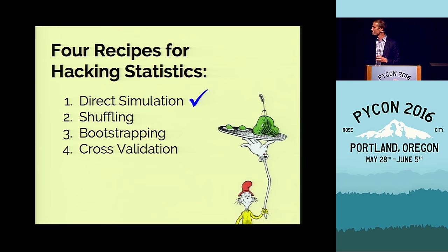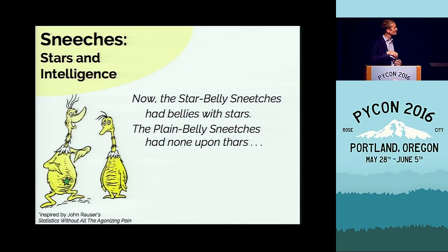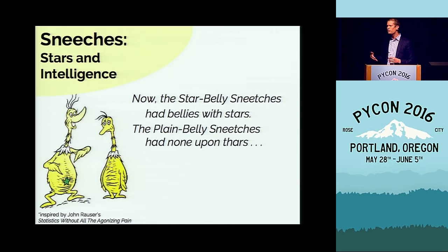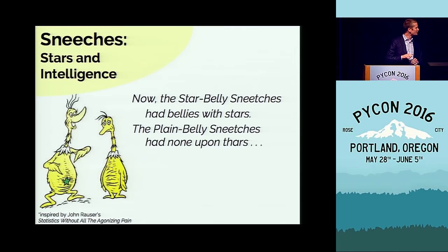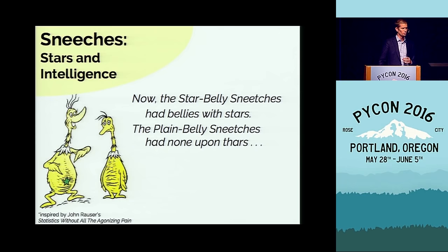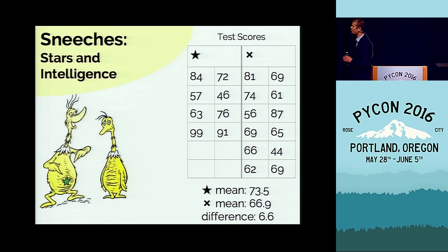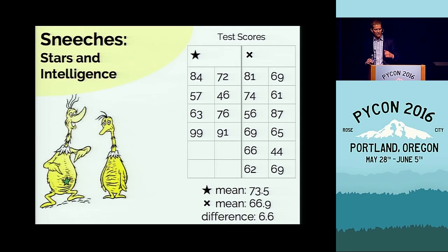The next recipe is shuffling. The Sneetches were a group of creatures — half had stars on their bellies, the other half didn't. Over time, the star-bellied Sneetches started to think they were special and lorded over the rest. Let's say you're a researcher who wants to answer whether star-bellied Sneetches really are better. You administer a test: star-bellied Sneetches have a 73.5% average, non-star Sneetches have a 66.9 average. The question is: is this difference significant? Could it just happen by chance?